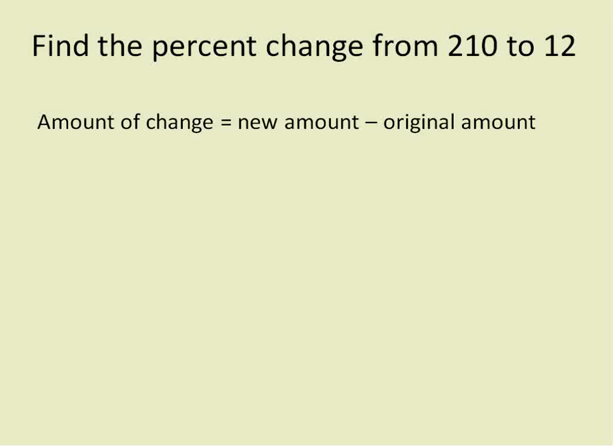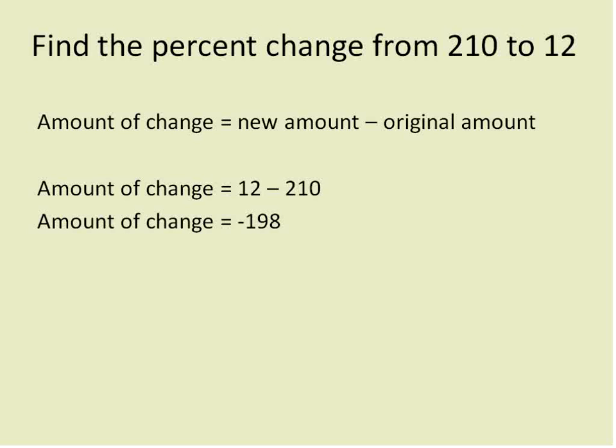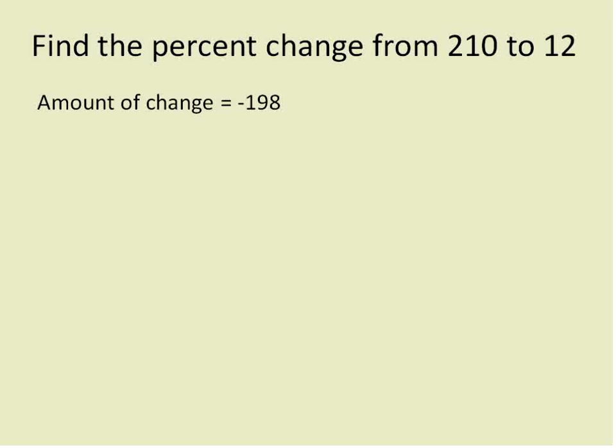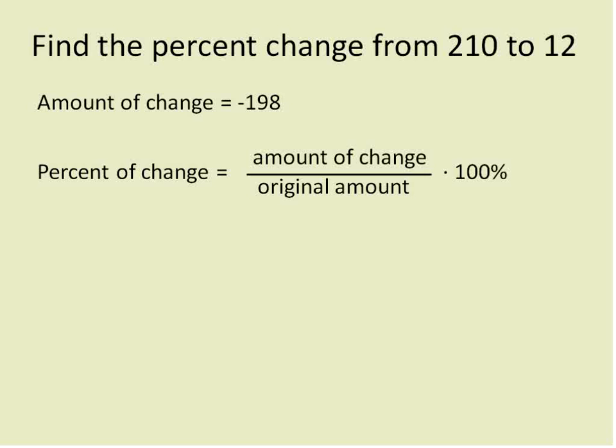Now we're going to find the percent change from 210 to 12. Let's say you invested in stocks or something — it went from 210 to 12. The amount of change: we find it by taking the new amount minus the original amount. So we take 12, our new amount, and subtract 210. This gives us a negative number — it decreased by 198. We'll write that down and substitute it into our percent of change equation.